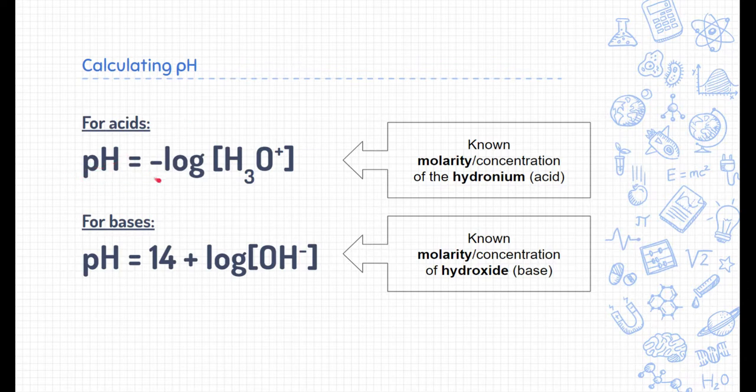Specifically, it says the pH is equal to the negative log of the concentration of hydronium. Notice here we have H3O plus in square brackets. Square brackets represent the molarity of a substance, which is the same as the concentration. And then H3O plus is typically the ion that we associate with acids because there's a higher concentration of hydronium.